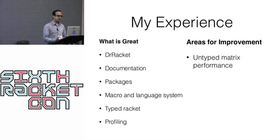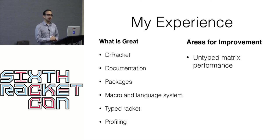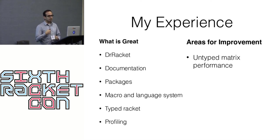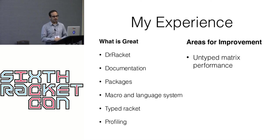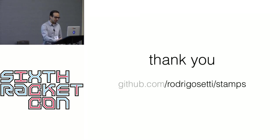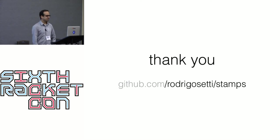One area for improvement is the performance of the matrix library — because of contract checking, it's super slow if I don't use Typed Racket. I had to figure out exactly the boundary where I need to be typed versus untyped, so I have a minimum number of calls and performance stays good. But overall, everything turned out to be awesome. That's all I wanted to share — please check out the project, and I'm happy to answer questions.